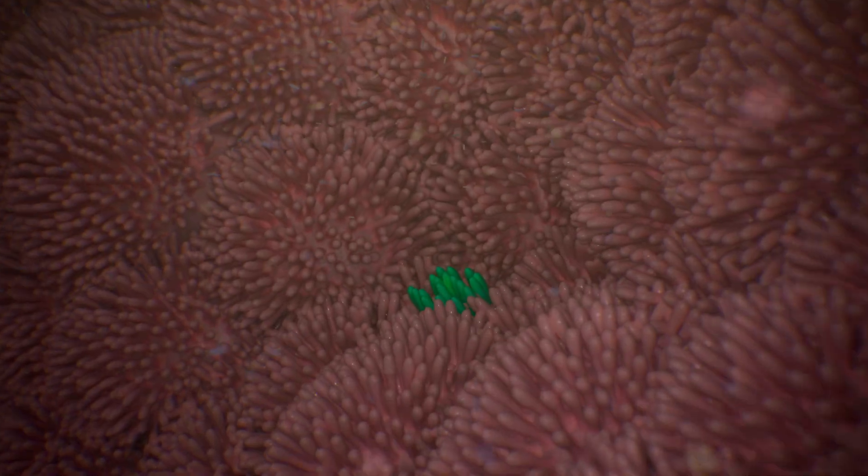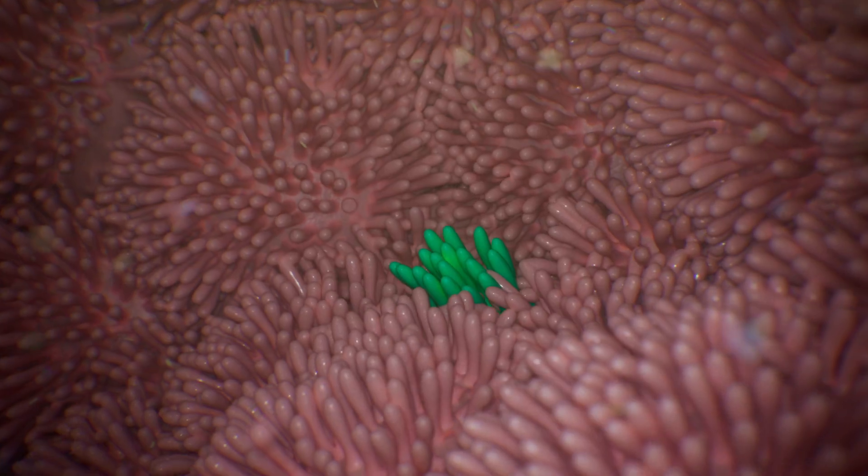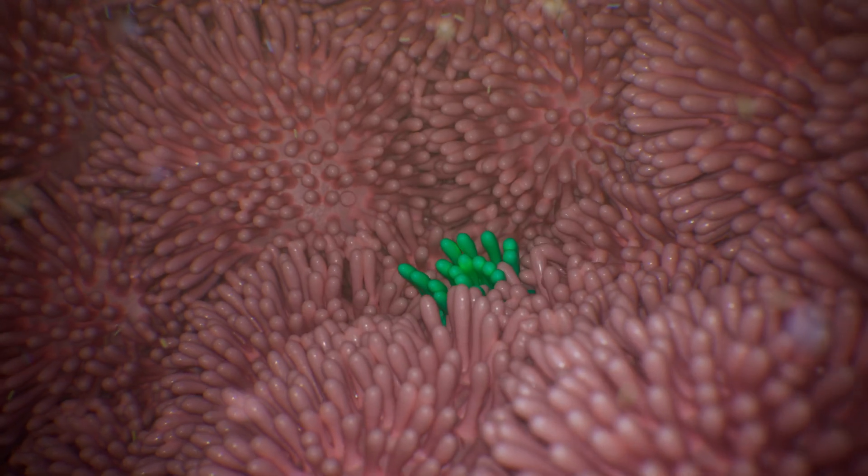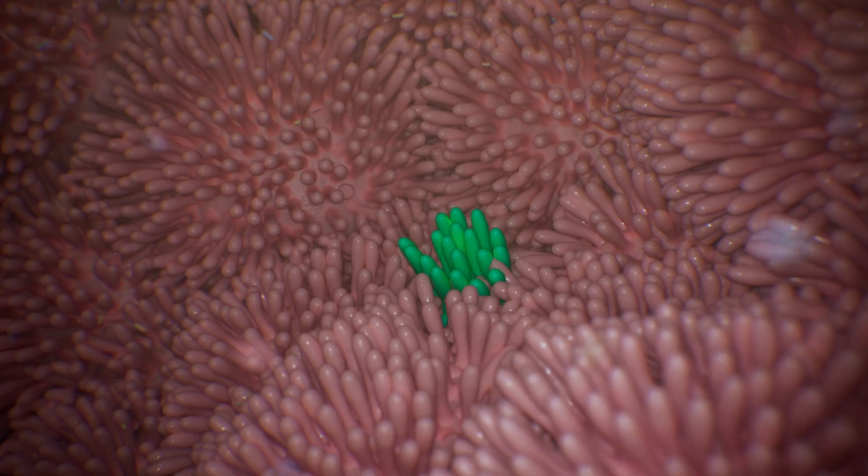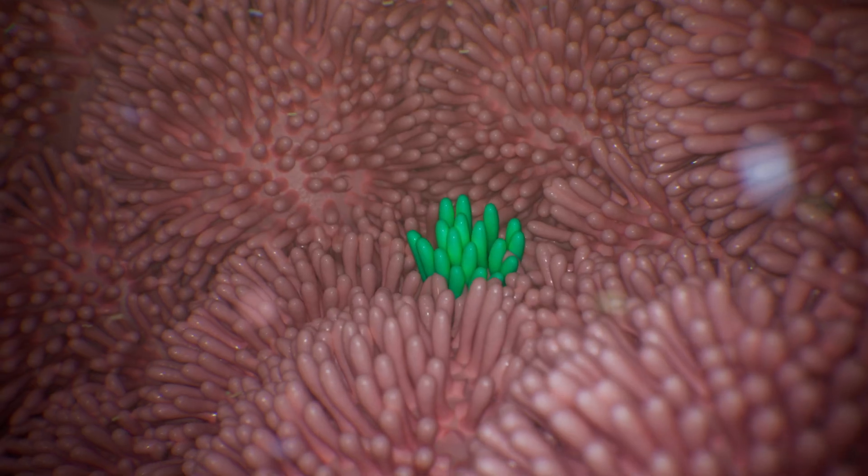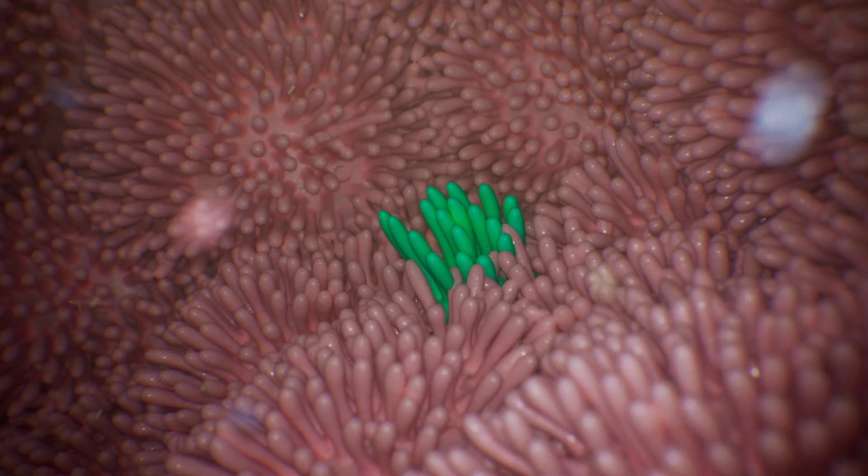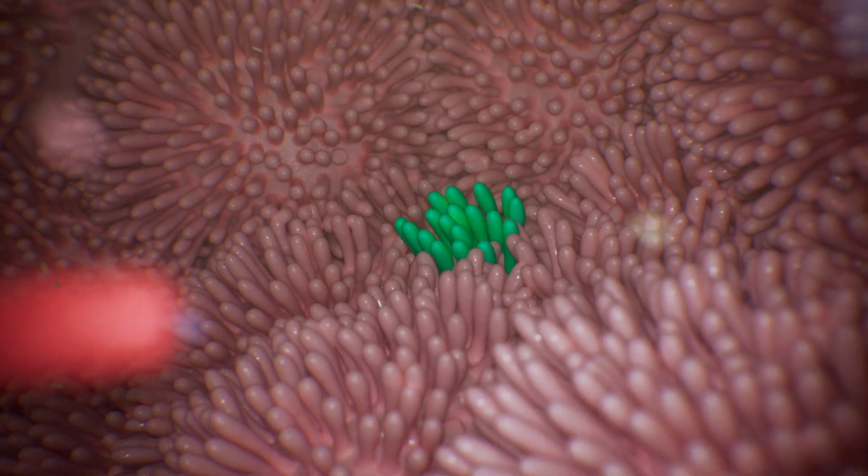Neuropod cells are fast transducers of nutrient signals to the brain. They also have receptors that detect microbes, raising the question, could neuropod cells also transmit signals from biota to the brain?